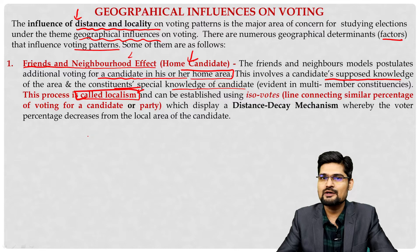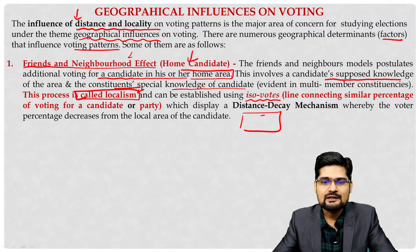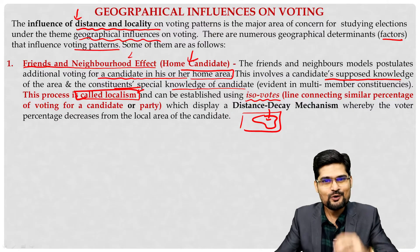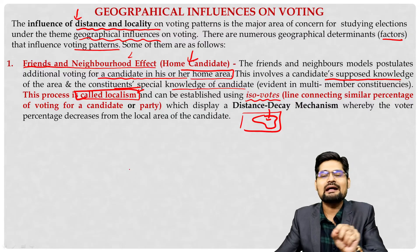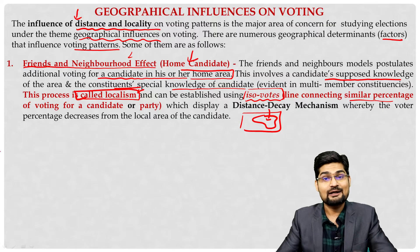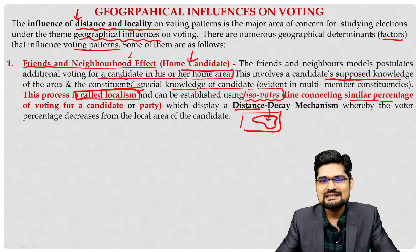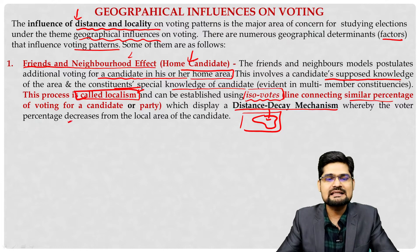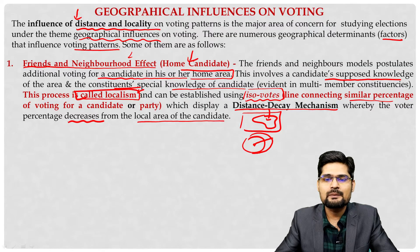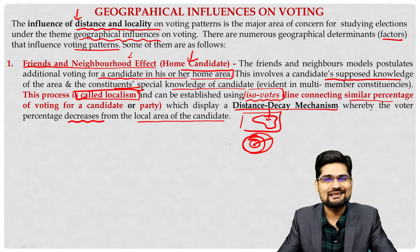ISO voting lines are constructed across the map, demarcating areas with similar percentage of voting for a candidate or party. There is also a gravity and distance decay analysis added later during the quantitative revolution. Distance decay mechanism means voter percentage decreases from the local area of the candidate — as you go away from the local area into the periphery, a local candidate will not get as many votes as in their own locality. This is the localism phenomenon.